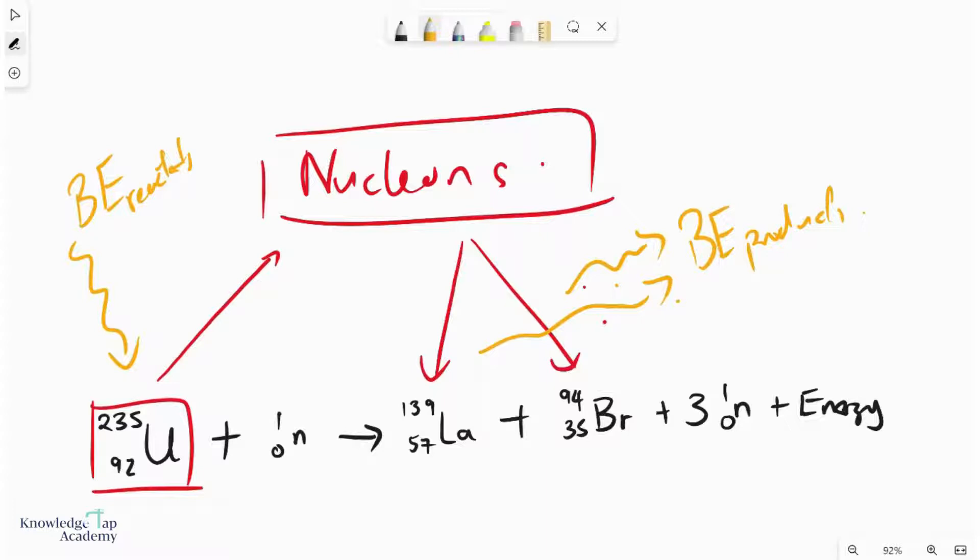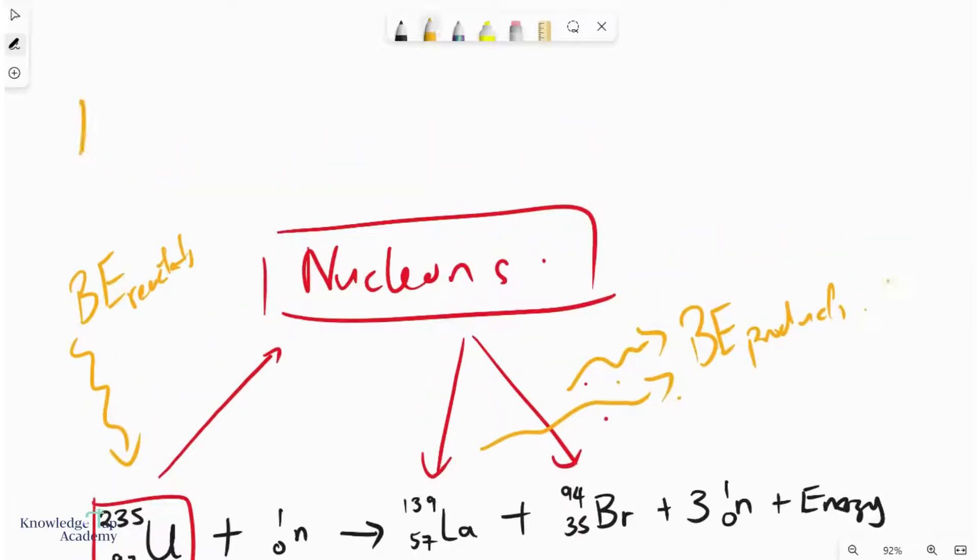Since this is released and since this is absorbed, how do you figure out the net energy released? Well, that is quite simple. The energy released in this case will be the summation of the binding energies of the products minus the summation of the binding energy of the reactants.